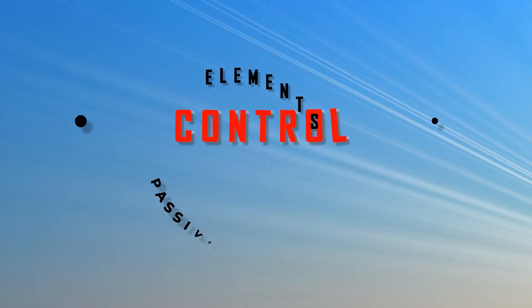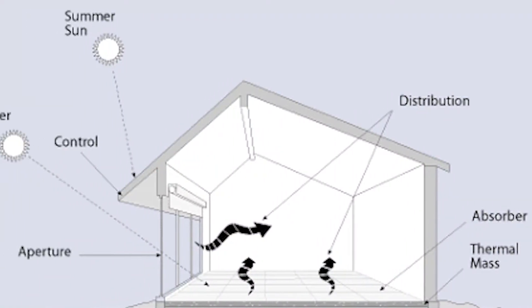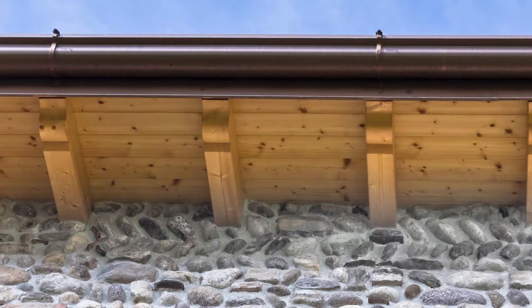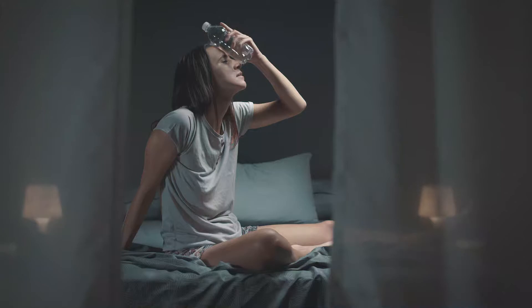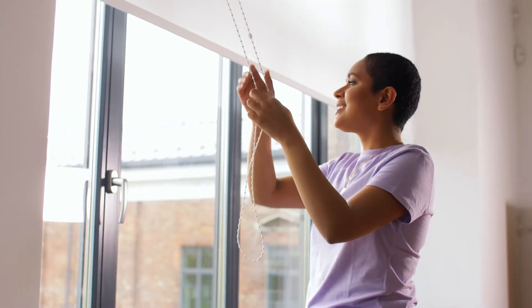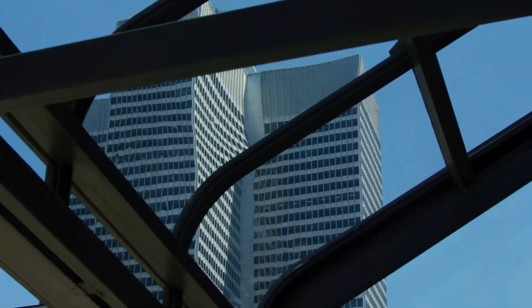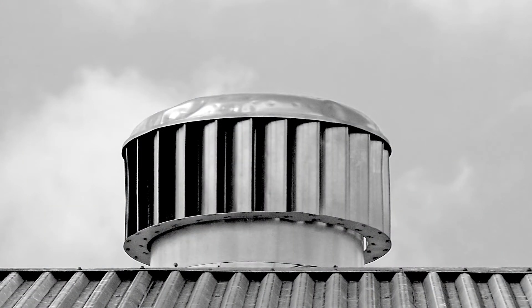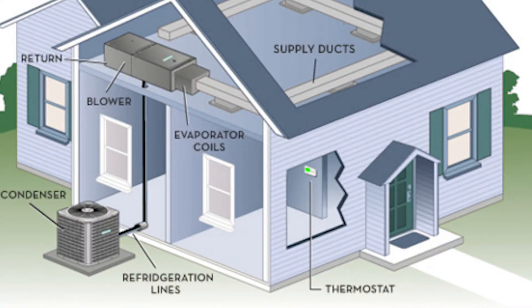Number five: Control. For example, roof overhangs can be used to shade the aperture area during summer months. Other elements can be used to control overheating or under-heating — for example, low-emissivity blinds, awnings, operable vents, and dampers can also be used to allow or restrict heat flow.